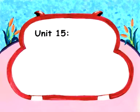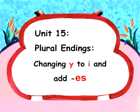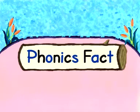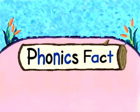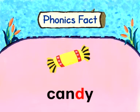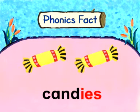Unit 15: plural endings — changing Y to I and adding -ES. Phonics fact: for words that end with a consonant and Y, we change the Y to I and add -ES. Let's take a look at the examples.